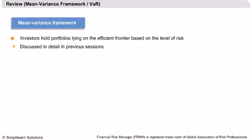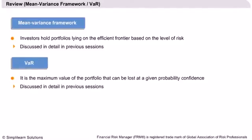We have also discussed another very important tool to measure risk: value at risk. VAR is the maximum value of the portfolio that can be lost at a given probability confidence. For example, if the VAR of a portfolio at 95% confidence is $10,000, then we can be 95% confident that the portfolio cannot lose more than $10,000.